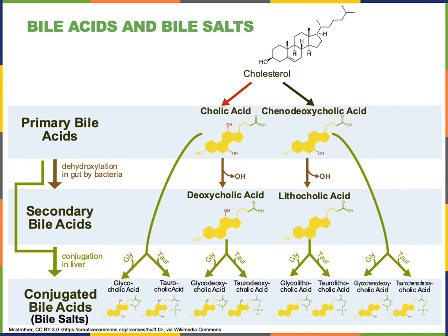Bile is reabsorbed by the intestines so that the bile salts and bile acids can be recycled. The enterohepatic circulation is the absorption of these bile salts and bile acids from the intestine into the blood that travels back to the liver, where the bile salts and bile acids can then be reprocessed into bile and secreted again into the intestines.